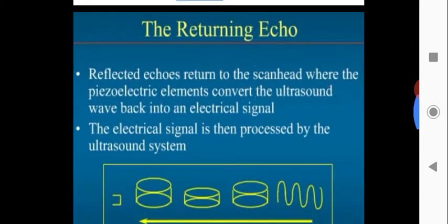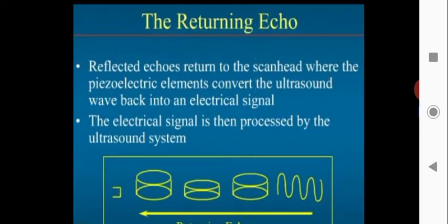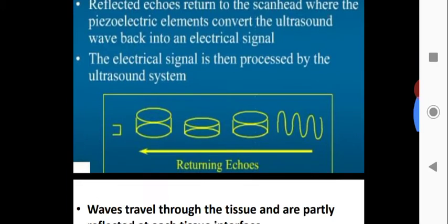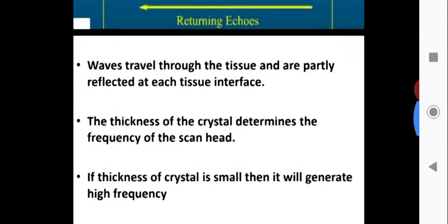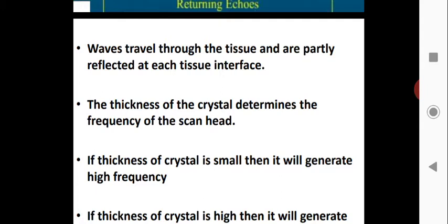The reflected echoes return to the scan head where the piezoelectric elements convert the ultrasound wave back to an electrical signal. The ultrasonic sound we transmitted is reflected by a particular object and received as an echo. The electrical signal is then processed by the ultrasound system. The waves travel through the tissue, reflecting at each interface.